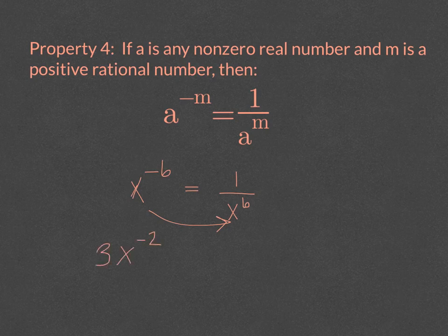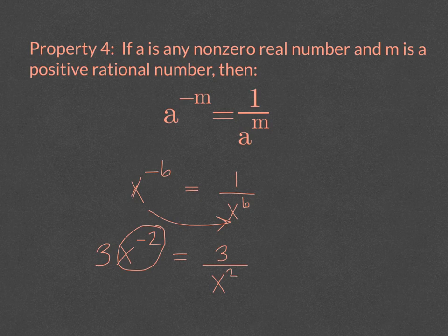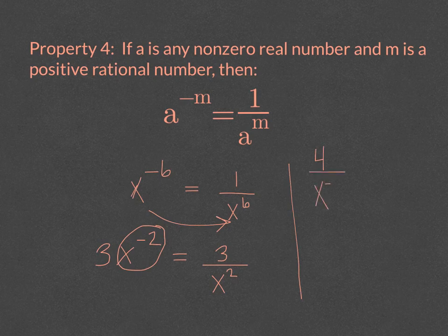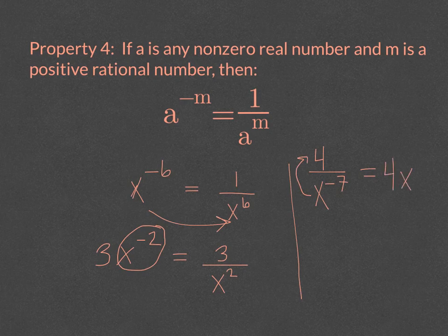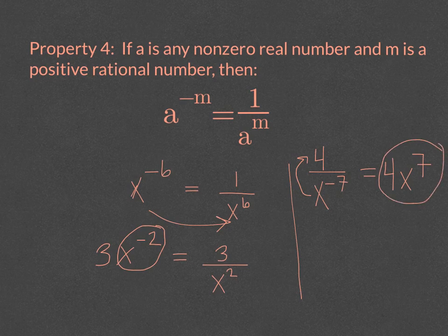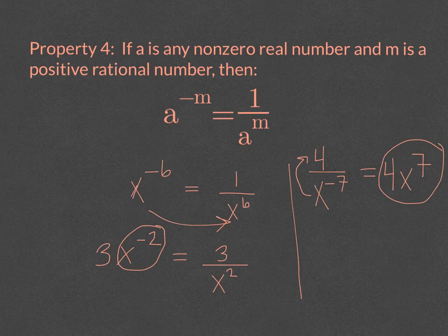So let's say we have 3x to the negative two. That negative two power is only on the x. So we keep our three in our numerator, and that negative two on the x makes that x go into the denominator. Now if you have something in the denominator, so let's say I had 4 over x to the negative seven, and I wanted to simplify that, it works the same way. You just change from being in the denominator to the numerator. And so this would be simplified. When you are dealing with exponents, you never want a negative exponent if you are trying to put it in the most simplified form.